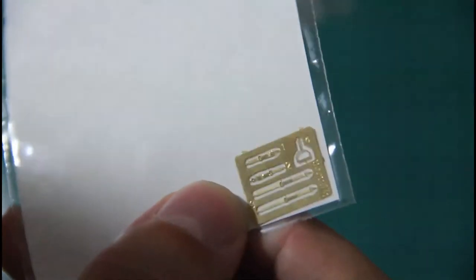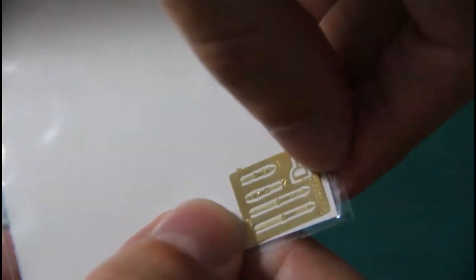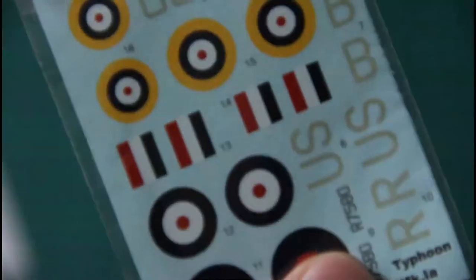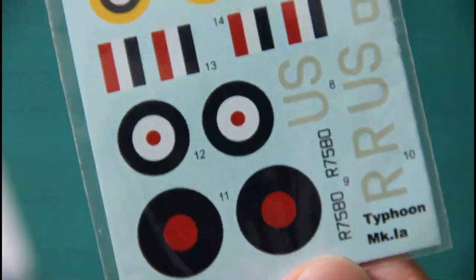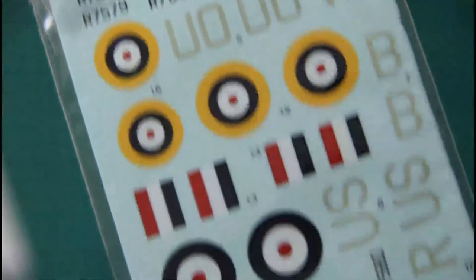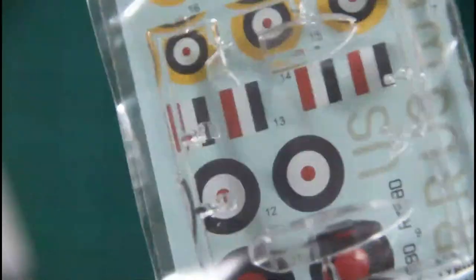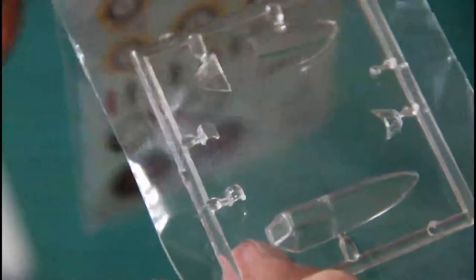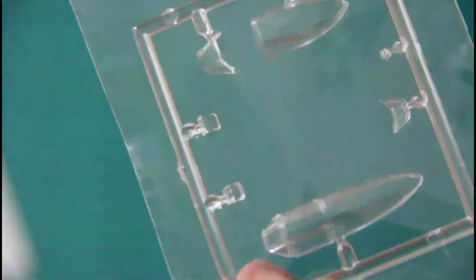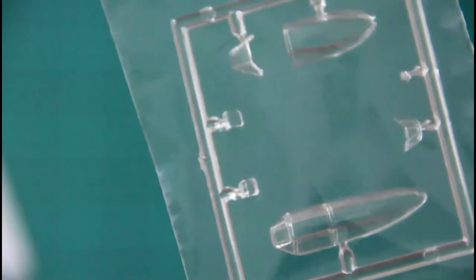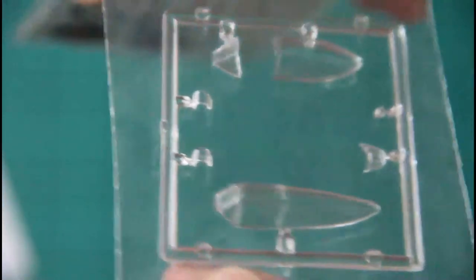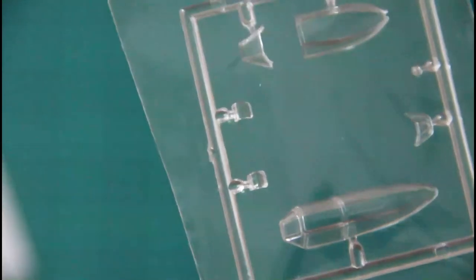Here we have decals. Really nice printing quality, all necessary symbols. No stencils included. And here we have clear parts. There are two versions of the canopy. One is provided for the open version I suppose, and one is for the closed one. Or maybe there are different types of the canopy.